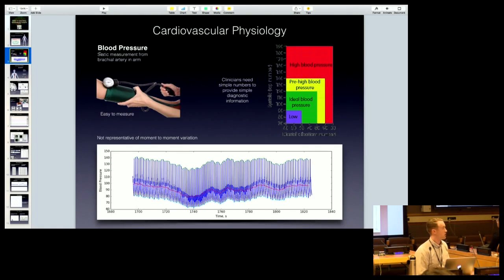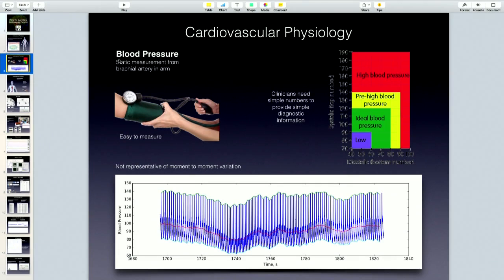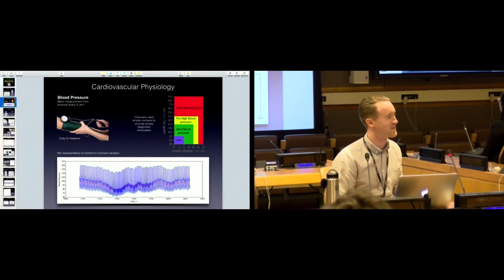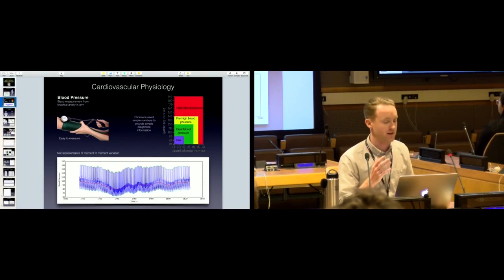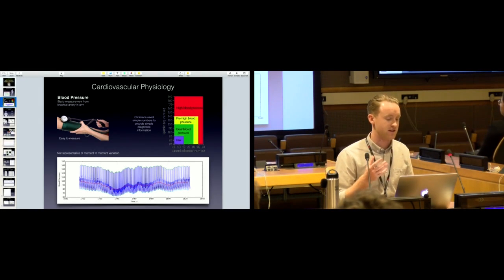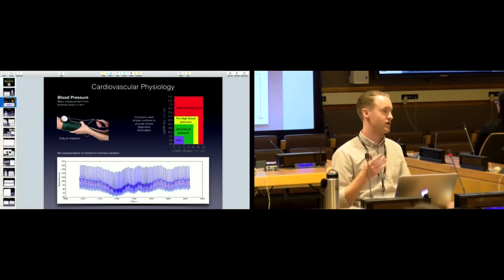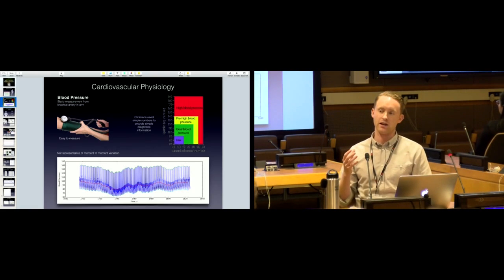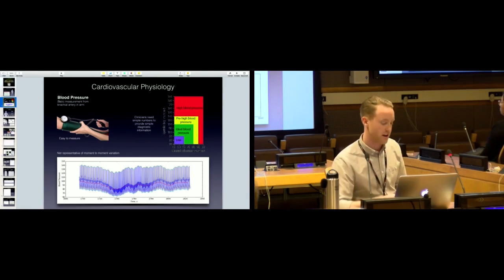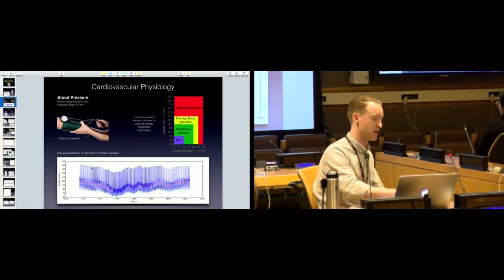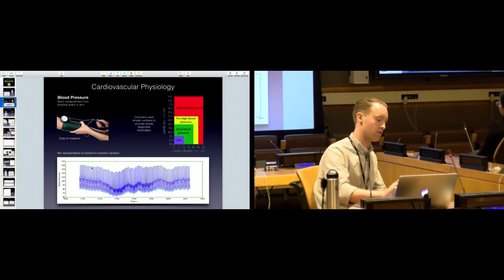Normally when you go to the doctor it's pretty common they'll measure your blood pressure - it's a static measurement, just a one-off. They'll say if your blood pressure is 120 over 80 you're healthy, if it's 160 over 90 you're not doing so hot. But the problem with this simplistic measure is it doesn't tell you anything about the moment-to-moment variation or how your body can adapt.